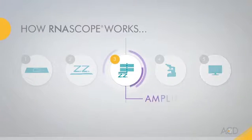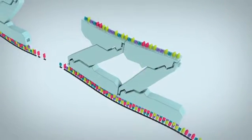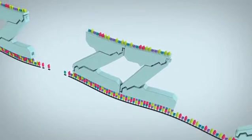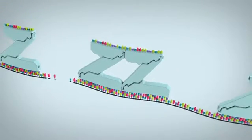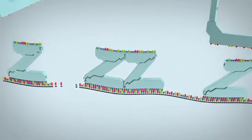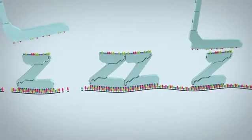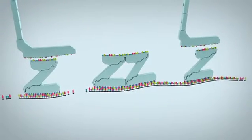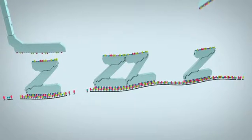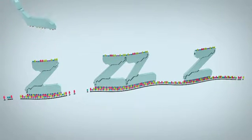Two adjacent independent Z probes need to hybridize to the target sequence in tandem in order for signal amplification to occur. Single Z probes binding don't affect the signal amplification as the pre-amplifier will not bind to those single Z probes. This prevents amplification of non-specific signals contributing to specificity.